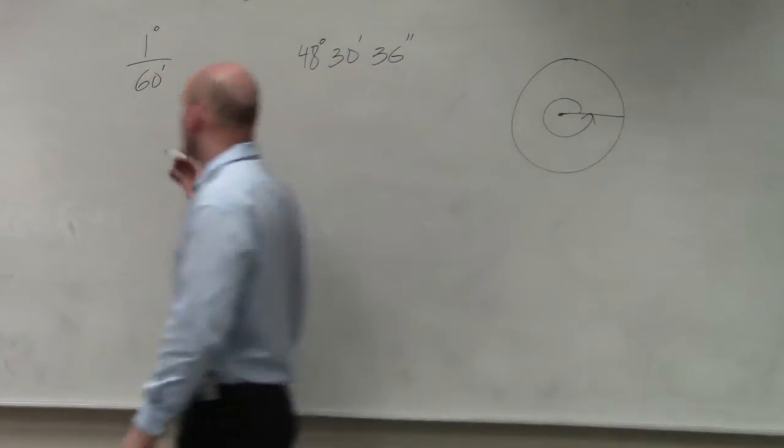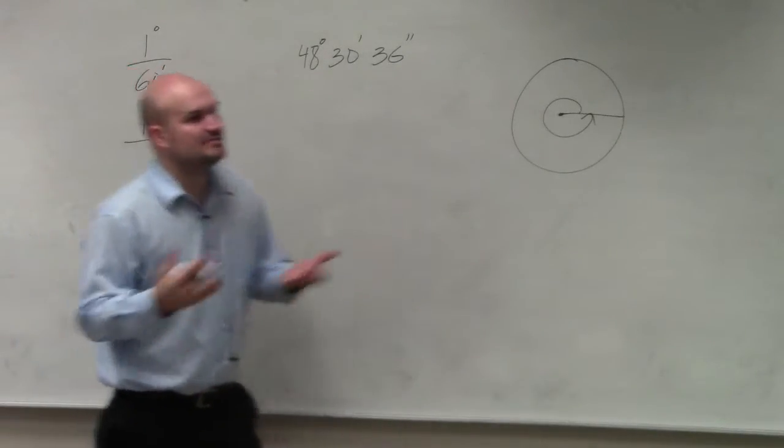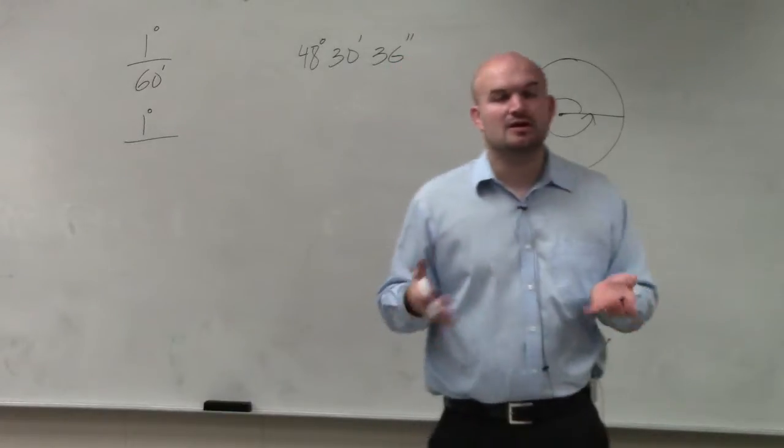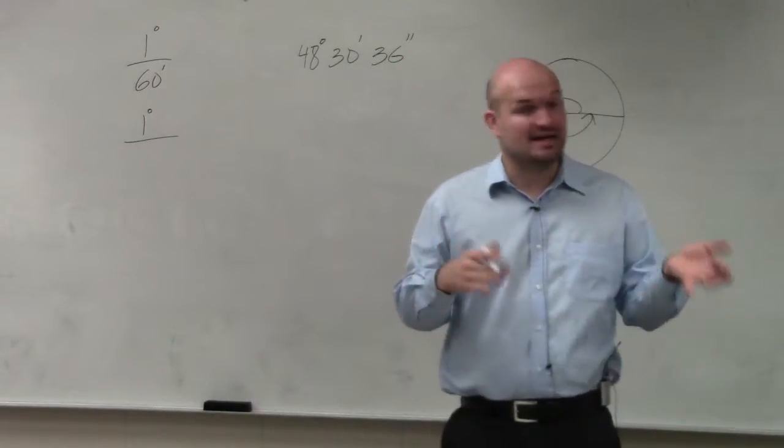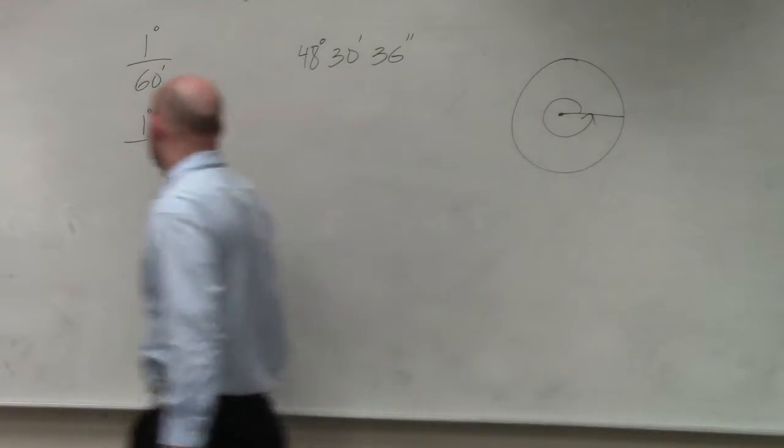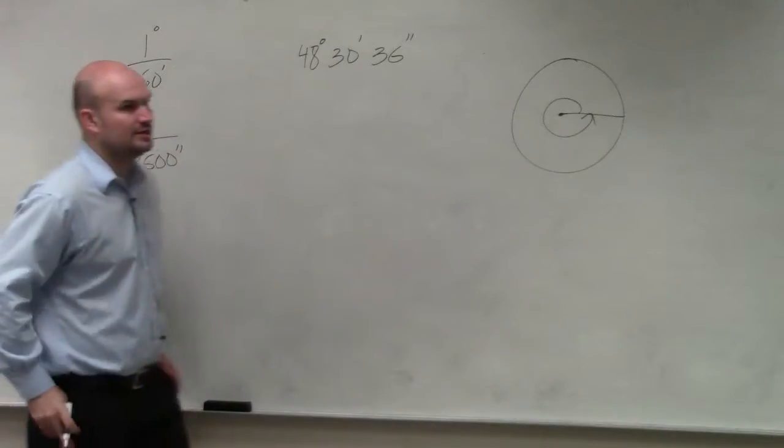Also, one degree is, so if you think about there's 60 minutes in an hour, well, how many seconds are there? Well, there's 60 seconds in a minute, and then 60 minutes in an hour, so that's 60 times 60, which is 3,600. So you could say there's 3,600 seconds in one degree. Would you guys agree with my mathematics on that portion?